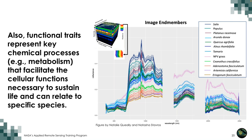Unique spectral signatures of different species are often quite distinct. For example, Salix (willow) is very high in the near-infrared relative to other species. The gaps in spectral signatures correspond to water absorption bands, which are typically masked due to noise. These unique signatures allow us to map dominant canopy species and also to identify plant communities based on how spectral signatures mix consistently when similar communities are present.